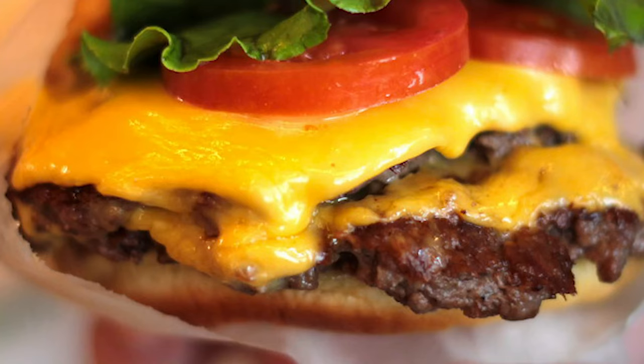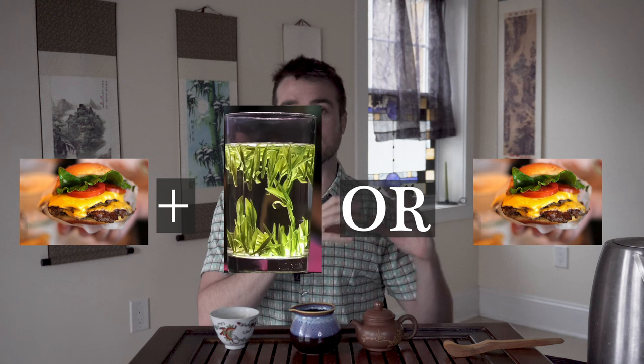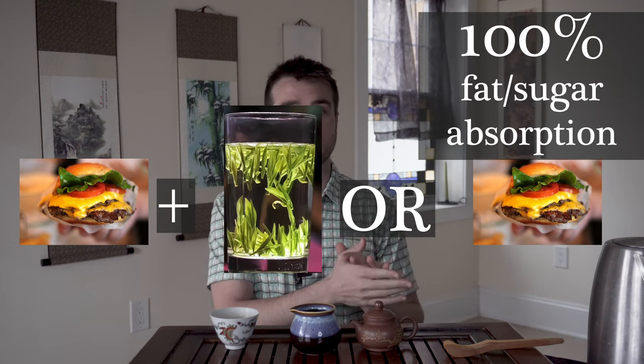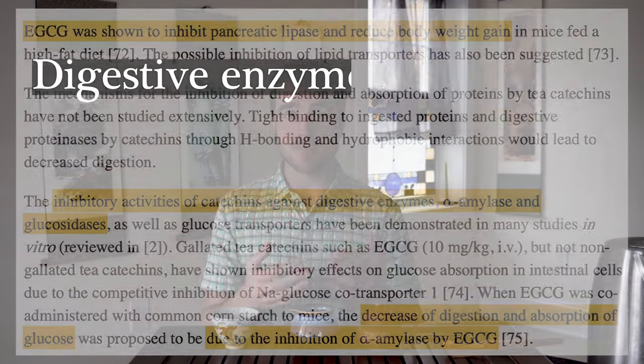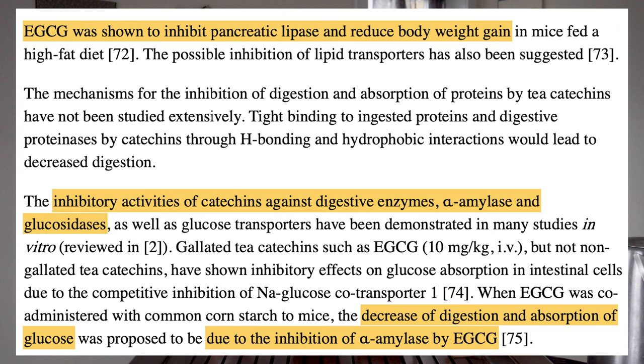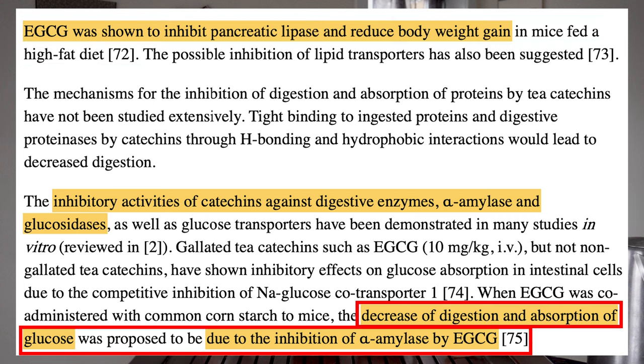Those digestive enzymes are less able to break down the fat and sugar from that greasy cheeseburger. So say you have a cheeseburger by itself versus cheeseburger plus a tall glass of green tea: with the cheeseburger alone you absorb 100% of the fat and sugar. With the cheeseburger paired with green tea, you might only absorb 70 or 80% of the fat and sugar, because the polyphenols in the tea are stopping those digestive enzymes from breaking down the fat and sugar into smaller, more absorbable forms. This is called digestive enzyme inhibition — polyphenols inhibit lipase, glucosidase, and amylase, the big fat and sugar-degrading enzymes.